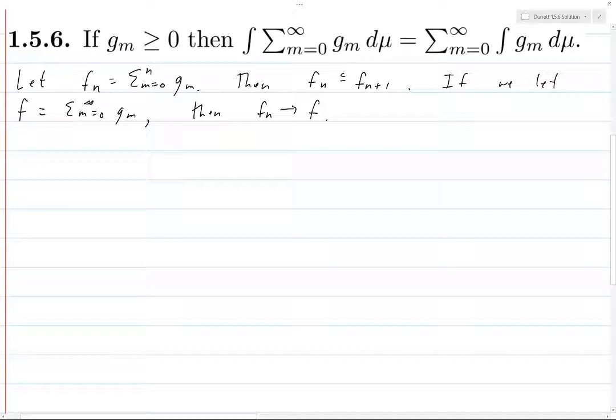Right, because the sum from zero to infinity is just the limit of the partial sums, which is precisely the limit of the F_n's. So by monotone convergence, the integral of the F_n's increases to the integral of F.